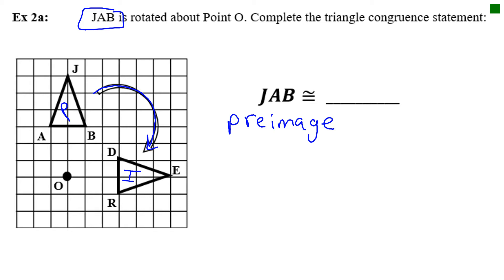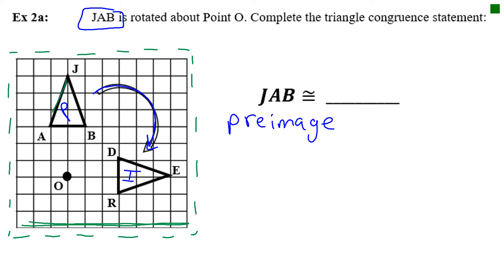If you need the patty paper, make sure it covers the entire graph and is flat with the bottom of the graph. Trace your pre-image — the corners (vertices) and the shape itself. Put your pencil on point O and rotate to the right. It's only going to take one turn, so it's a rotation of 90 degrees clockwise. J should land right on top of E, so J becomes E. A becomes D, and V becomes R. Triangle JAV is congruent to triangle EDR.